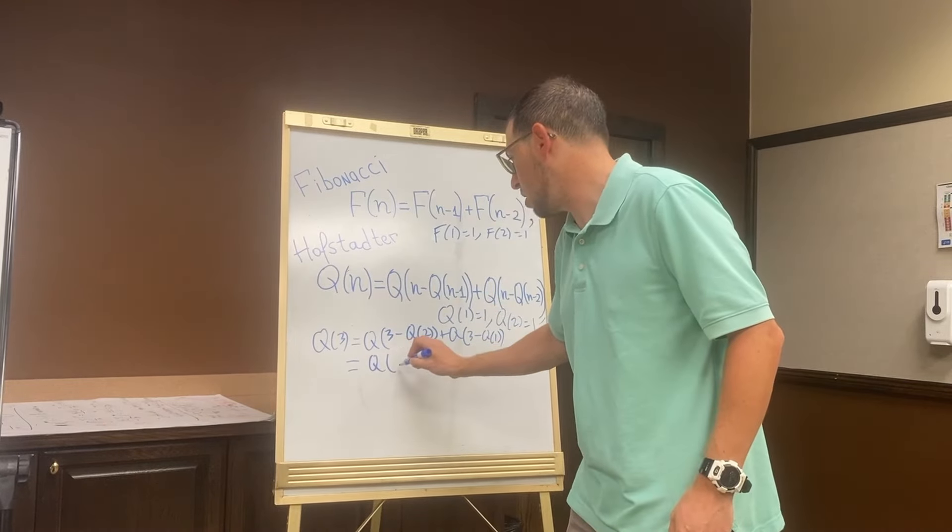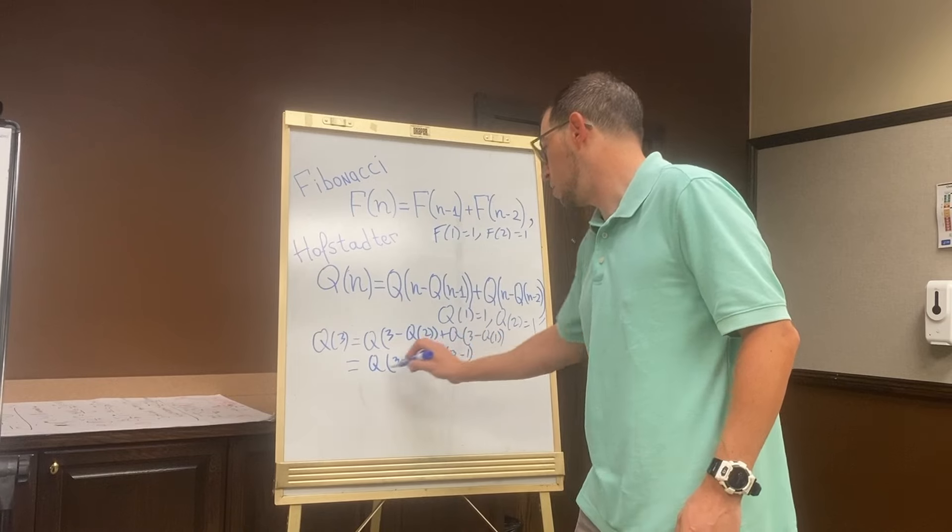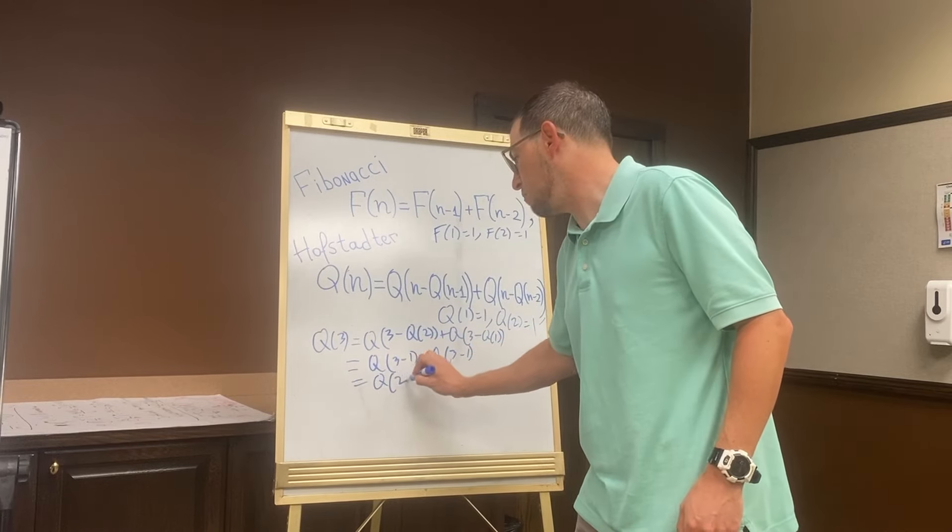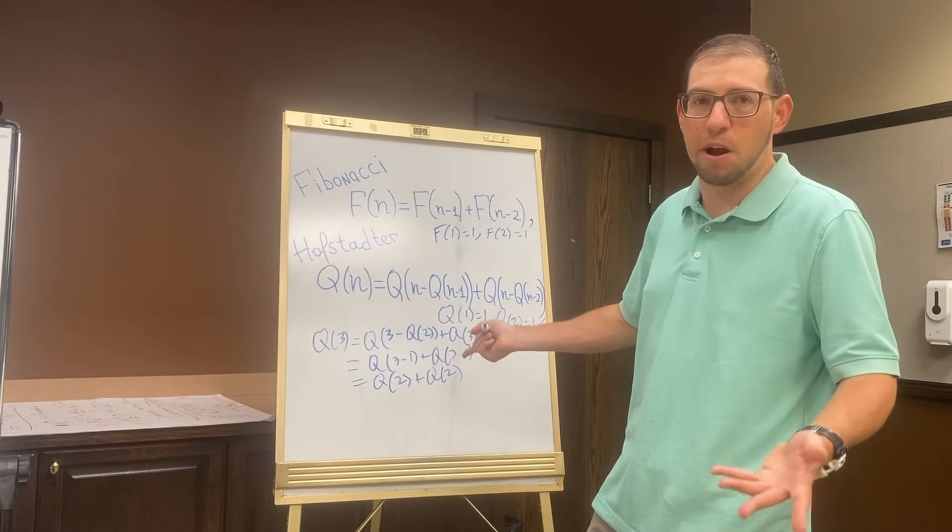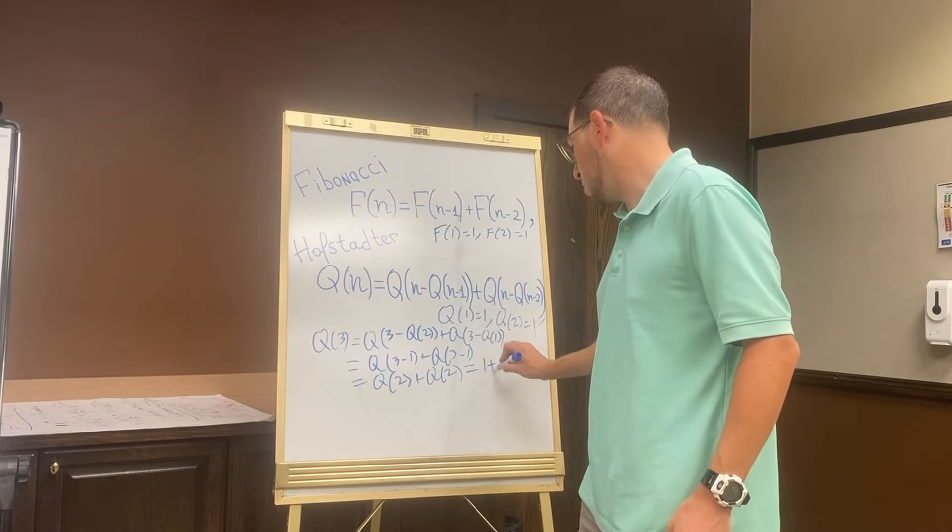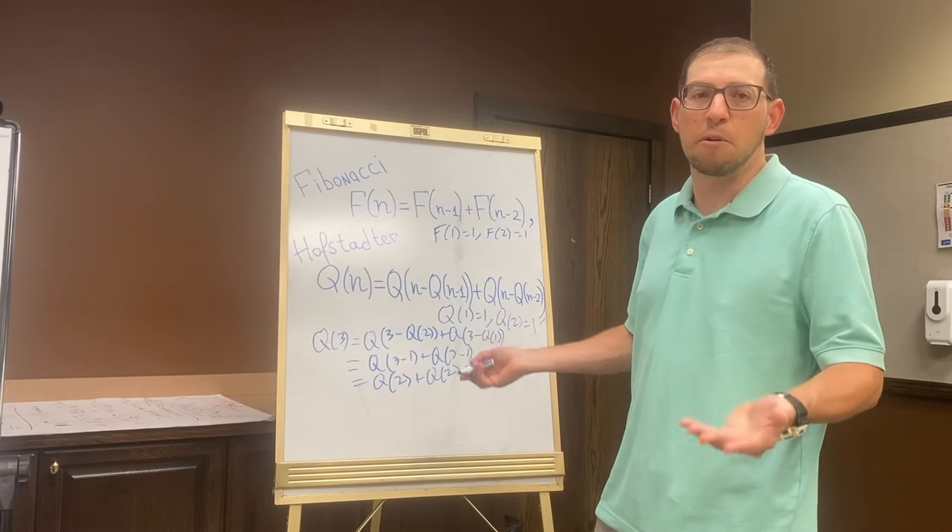So this is Q(2) + Q(3 - Q(2)) + Q(2), and Q(2) are both terms that we already know. So this is 1 + 1, or 2. So the third term in the sequence is 2, and you can keep going, but that would not make a very exciting video. So I will stop here and instead talk about what happens if you compute a few more terms.